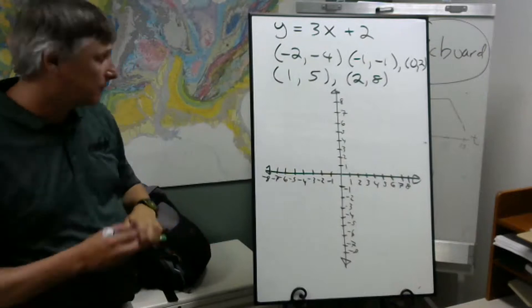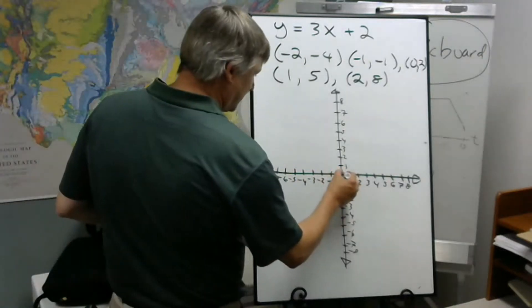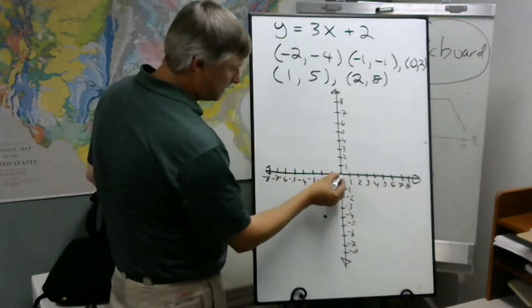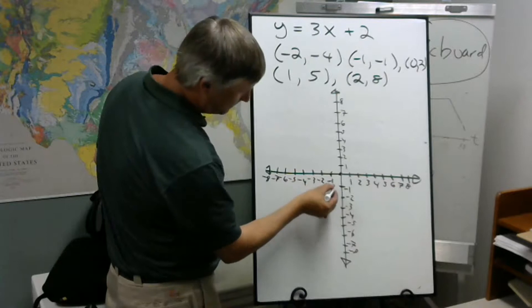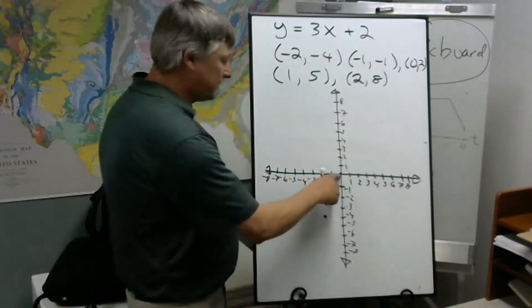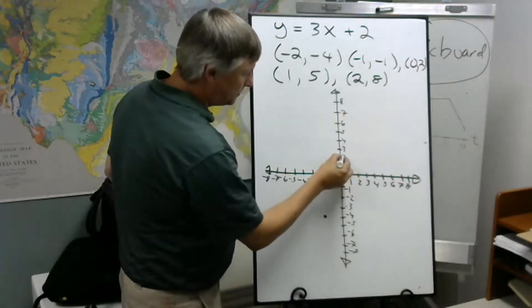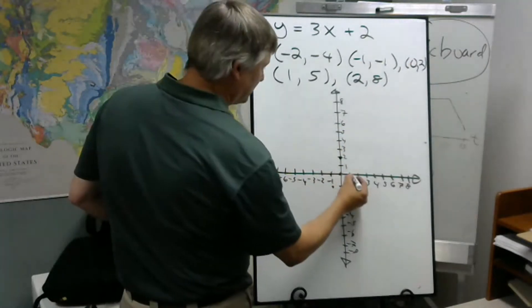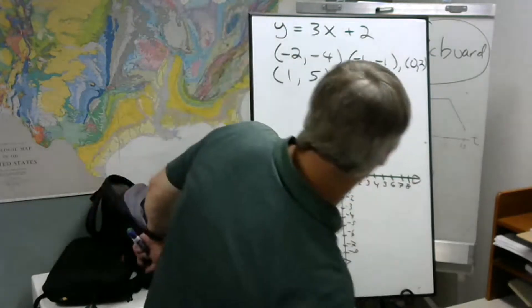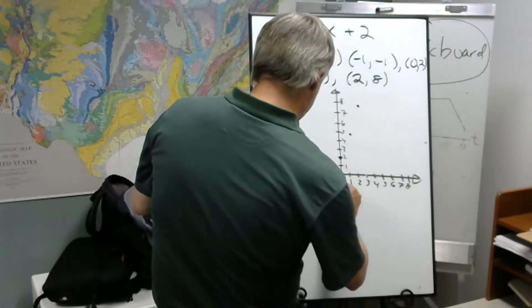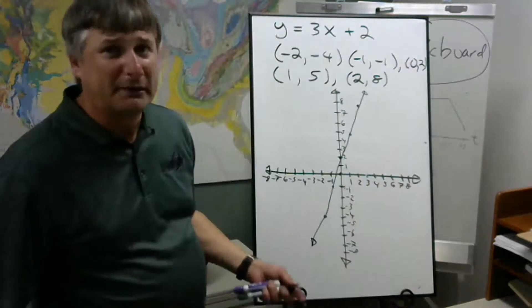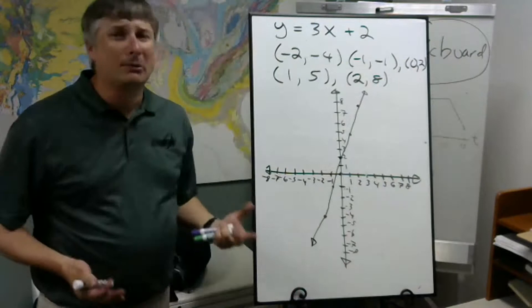So we have negative 2 for x, negative 4 for y. I'm going to use the origin method. I'm going to come out to negative 2, drop down to negative 4. And then for this one, come out to negative 1, drop down to negative 1. Now, this is 0 and 2. When we start at the origin, that's where x equals 0, so we don't have to go anywhere horizontally. But we do need to go up to y is 2. And then go out to 1, up to 5, and then out to 2, up to 8. I'm going to connect the dots.